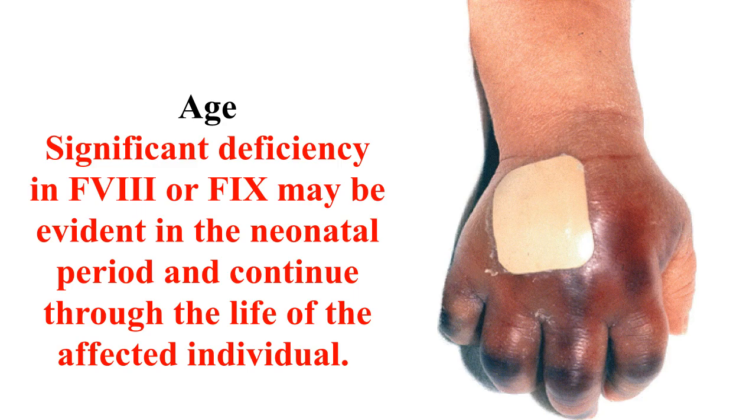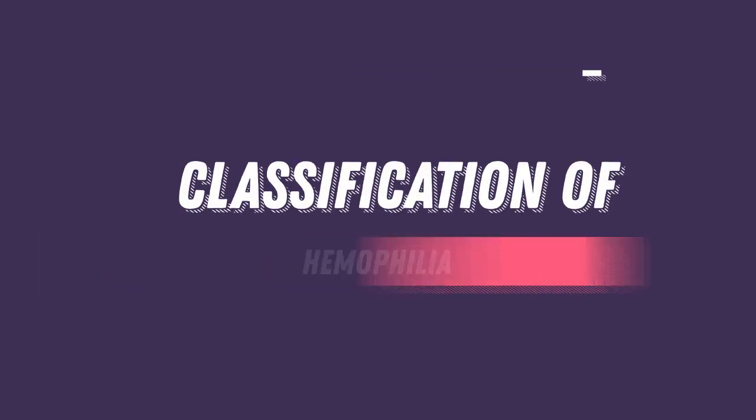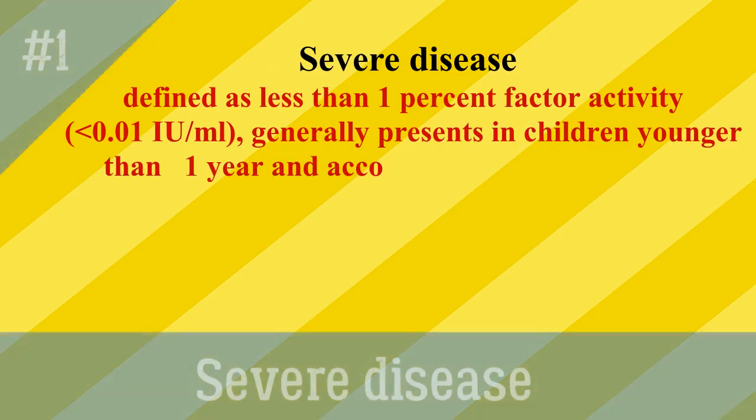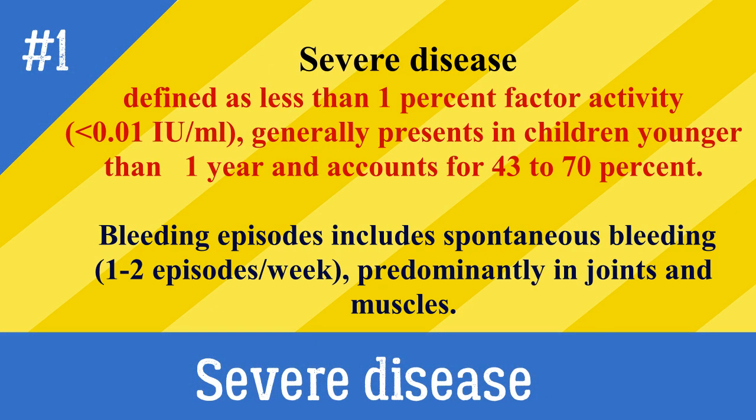Hemophilia is classified into three types. Severe disease is defined as less than 1 percent factor activity (less than 0.01 IU/mL), generally presenting in children younger than one year, and accounts for 43 to 70 percent of cases. Bleeding episodes include spontaneous bleeding of one to two episodes per week, predominantly in joints and muscles.